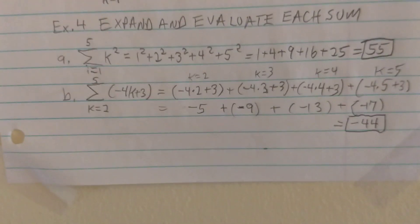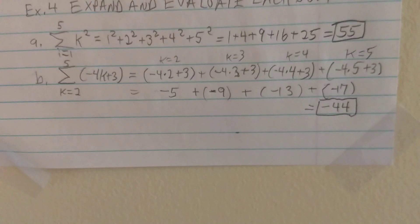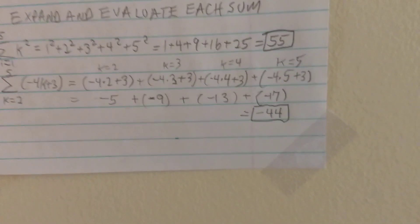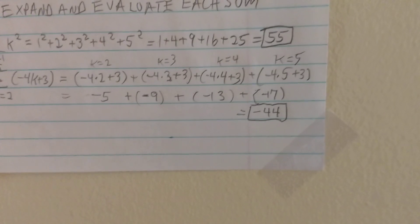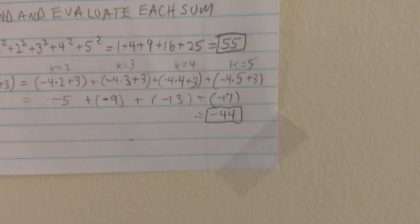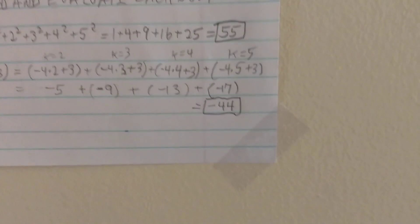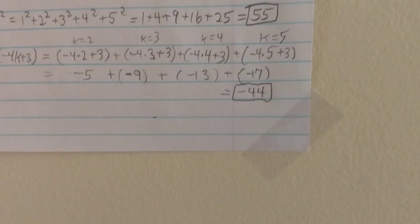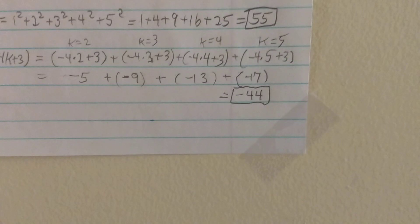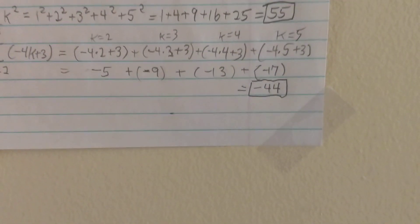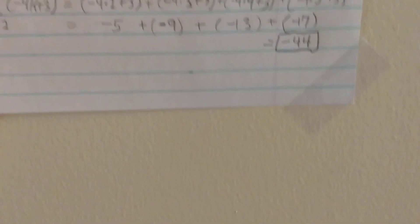The second series using sigma notation goes from k equal 2 to k equal 5 of the sequence term negative 4k plus 3. Starting with k equal 2: negative 4 times 2 plus 3 is negative 8 plus 3, or negative 5. For k equals 3: negative 4 times 3 plus 3 is negative 12 plus 3, or negative 9. Notice from negative 5 to negative 9 we subtract 4, matching the minus 4k. So the next term is negative 13, and the k equals 5 term is negative 17. Adding all those up comes to negative 44.